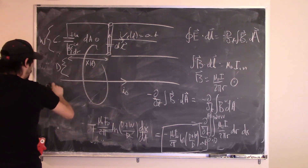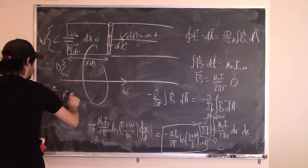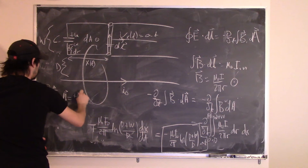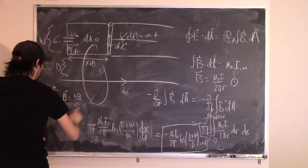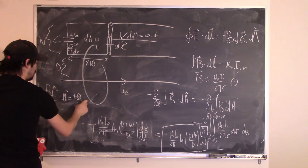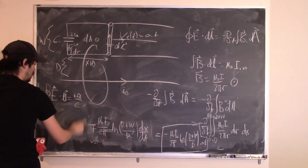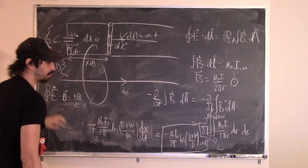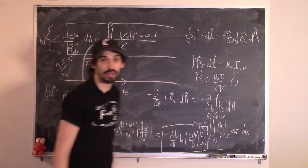For the left-hand side: going around the loop I see a positive charge, so the integral of E dot dL gives plus Q divided by C. Setting this equal to the right-hand side and solving for Q gives the final answer.